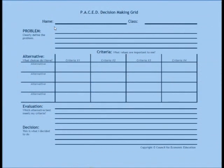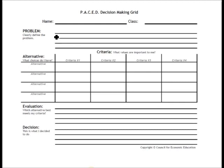Today we're going to learn how to use the PACE decision-making grid as a way to make our decisions. The first thing you do is come up with a problem — that's what the P in PACE stands for. As a simple example, let's say our problem is: where should we go for lunch?